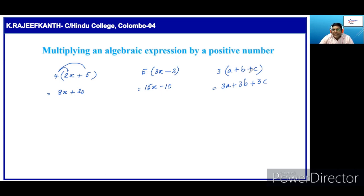There are three terms: a, b, and c. So, we have to multiply the first term a by 3, then 3 into a is 3a. Then, plus b into 3 is 3b. Plus c into 3 is 3c.